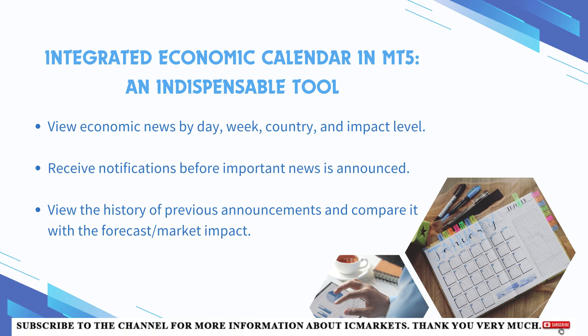The economic calendar integrated in MT5 is an indispensable weapon. One of the worthy upgrades of MT5 compared to MT4 is the economic calendar integrated directly into the platform, instead of having to access an external website. Now you can watch live news filtered by day, week, country, and level of influence. You can get notified before important news is released, view the history of previous releases, and compare it with market impact forecasts. Traders who trade news — or avoid trading during news release hours — will find this feature a huge time and effort saver.